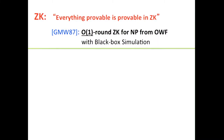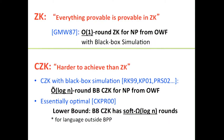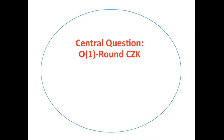For zero-knowledge, we know constant-round constructions from one-way functions with black-box simulation. On the other hand, concurrent zero-knowledge seems harder to achieve, because the best protocol with black-box simulation has logarithmic rounds. This is essentially tight due to a matching lower bound. Therefore, a central question is whether we can get constant-round concurrent zero-knowledge — necessarily, we'll have to use non-black-box simulation to circumvent the lower bound.